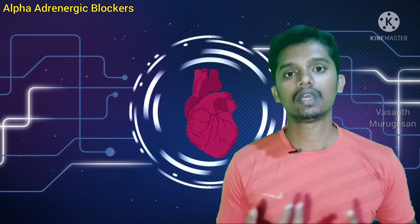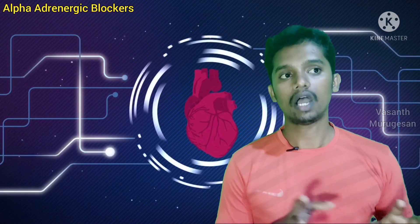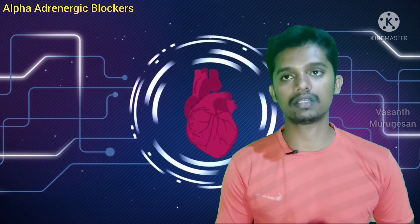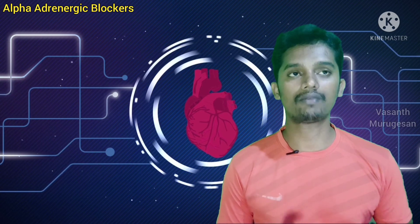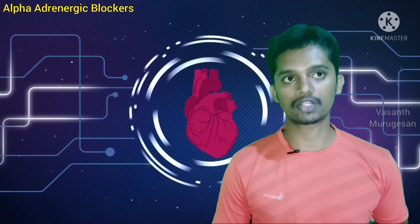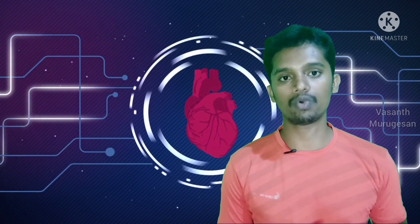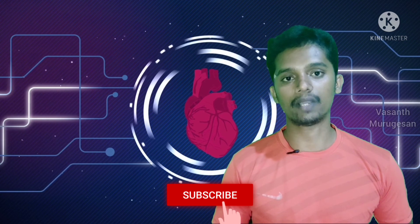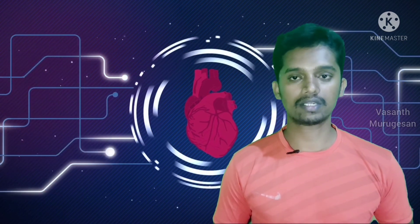Overall, we covered Alpha Adrenergic Receptor Blockers — their basic definition, classification, Alpha 1 and Alpha 2 receptor blocker effects, pharmacological actions, mechanism of action, adverse drug reactions, and therapeutic uses. We are finishing alpha adrenergic receptor blockers. Next topic will be Beta Adrenergic Receptor Antagonists. Subscribe to our channel and click on the bell icon. Share the video with your friends and post questions in the comment box.